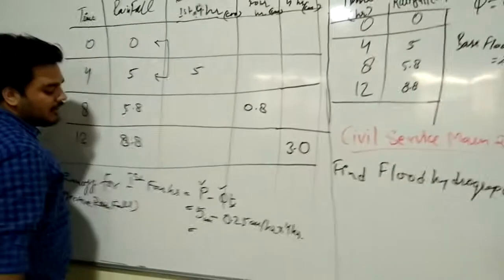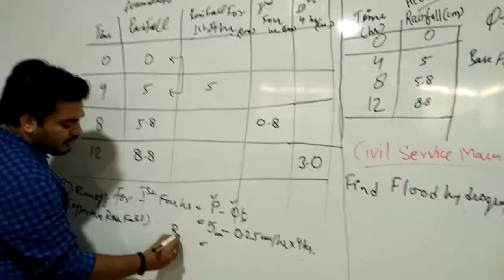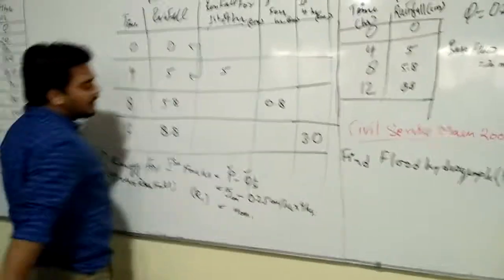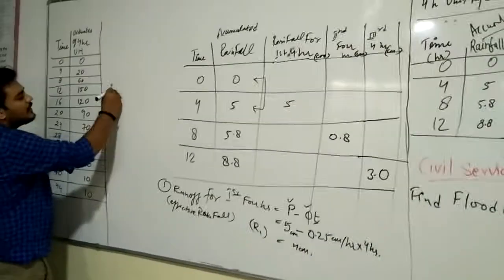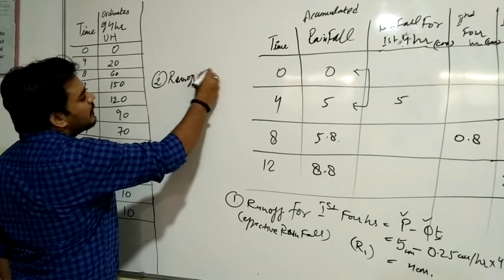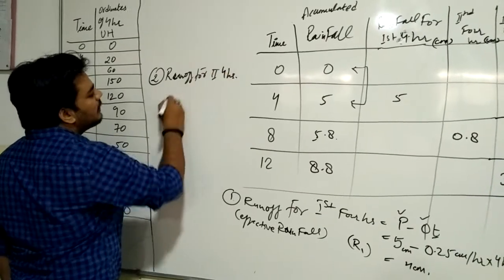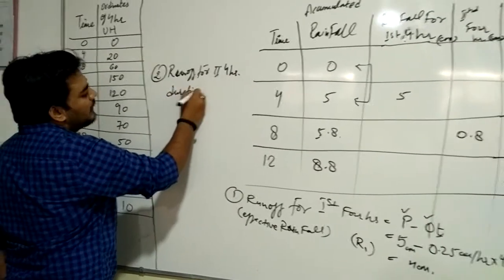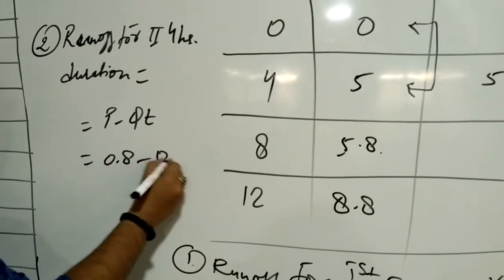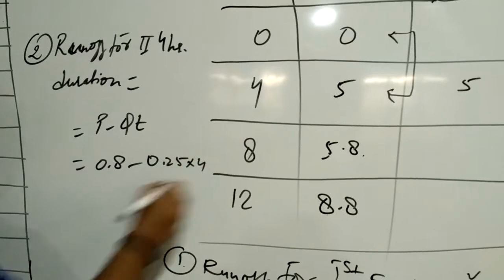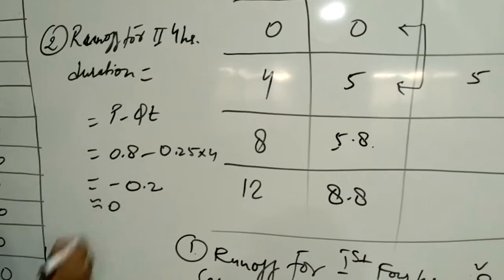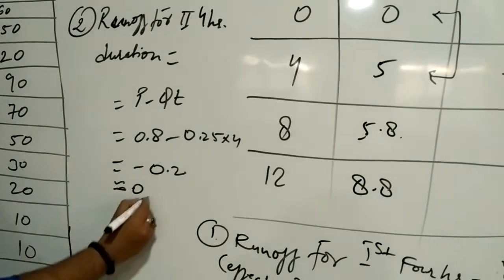The runoff for the first four hours, denoted R1, is: 5 minus (0.25 × 4) = 4 centimeters. For the second four-hour duration, applying the same formula, P minus φ·t gives 0.8 minus (0.25 × 4), which yields a negative value of −0.2. Since this is negative, it is neglected and R2 is equal to zero centimeters.